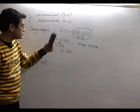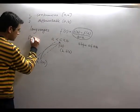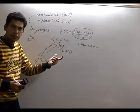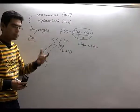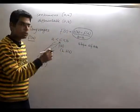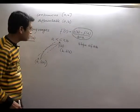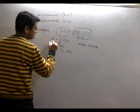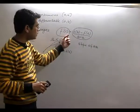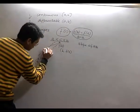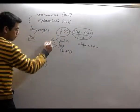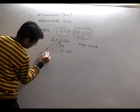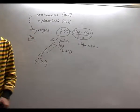And f'(x) is the slope of the tangent to the curve at any given point x. So f'(c) means the slope of the tangent at point c. The theorem says there exists a point c between a and b such that the slope of the tangent at c equals the slope of line AB — meaning the tangent at c is parallel to the chord AB. This is the geometric interpretation of Lagrange's theorem.